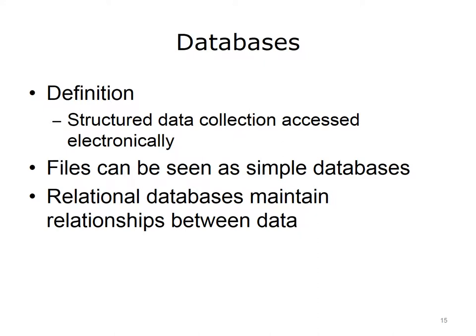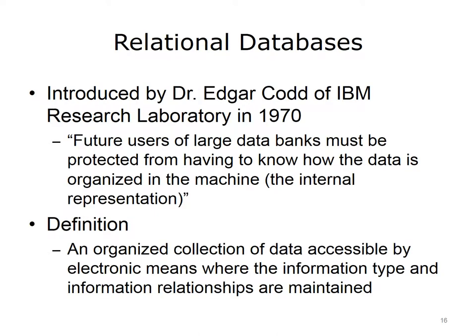So, what exactly is a database? A database is a structured data collection which is accessed electronically. The text file used in this lecture that contained contact information can be considered a very simple database. A relational database is a database that maintains relationships between data elements and is the focus of this unit. The concept of a relational database was first published by E.F. Codd in the journal Communications of the ACM in June 1970. Codd held the view that users should not have to keep track of how information is stored in a computer in order to use it. A relational database is an organized collection of data accessible by electronic means where the information type and relationships are maintained internally by the system itself.